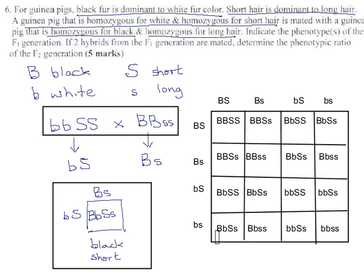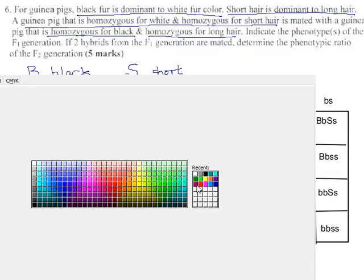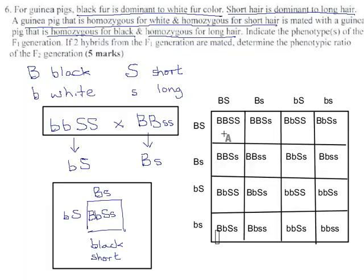Now what do they actually look like? Let's switch colors to make this a little nicer to read. Big B means black, and big S means short. This is black and short. Black and short. The whole top row is black and short.